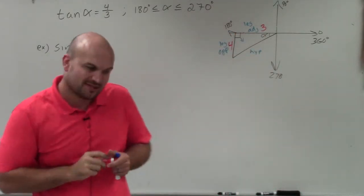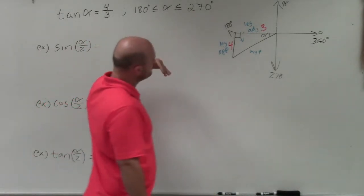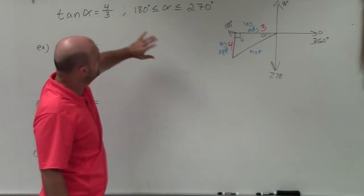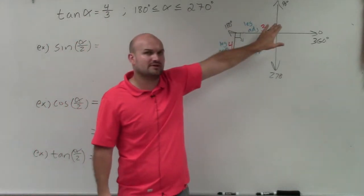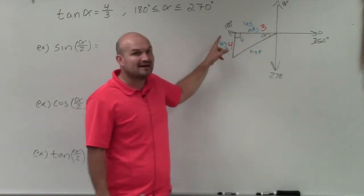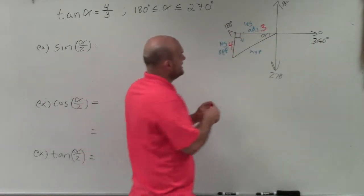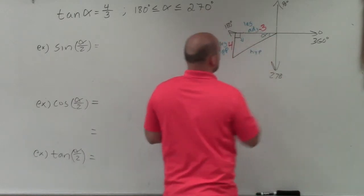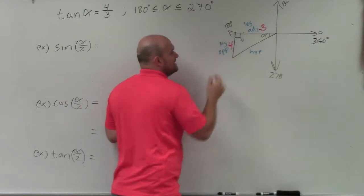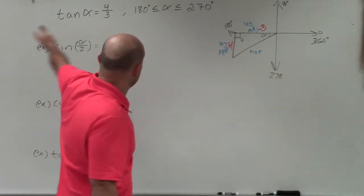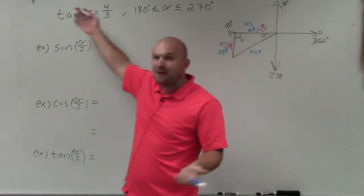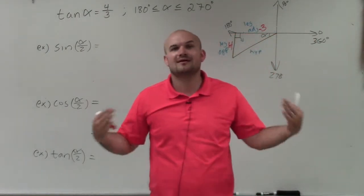Here's where the constraint matters. While 4 and 3 work numerically, my triangle is in the third quadrant. Going left, 3 is not positive — it's negative. Going down, 4 is not positive — it's negative. But negative 4 divided by negative 3 is positive 4 thirds, so that still works.